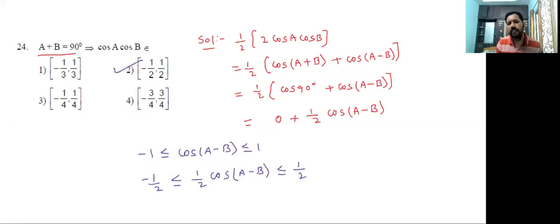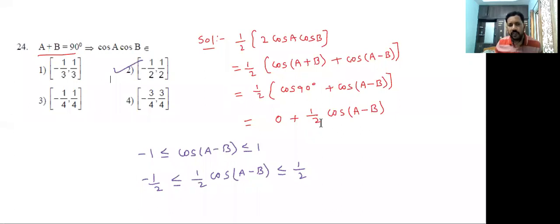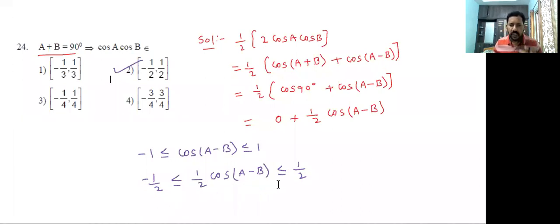For cos a · cos b, multiply and divide by 2. Using the formula 2cos a·cos b = cos(a+b) + cos(a-b), and since a + b = 90°, cos 90° = 0. Finally we get ½cos(a - b). Since the range of cos(a - b) is [-1, 1], the range of ½cos(a - b) is [-½, ½]. The second option is correct.